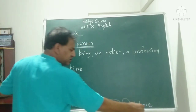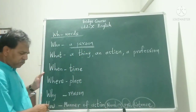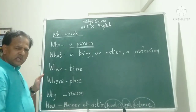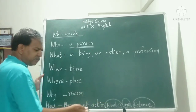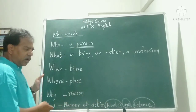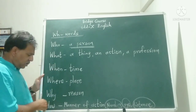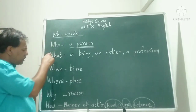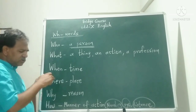So in this way: HOW MANY for number — MANY for countable, MUCH for uncountable. HOW OLD for time span or age, and HOW LONG for distance. So these are the WH words we have seen: WHO, WHAT, WHEN, WHERE, WHY, and HOW.